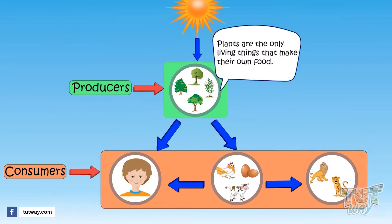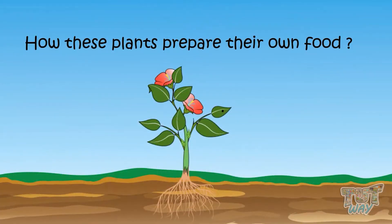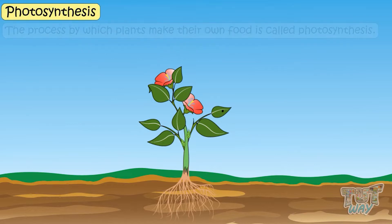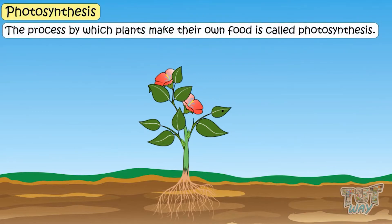Let's see how these plants prepare their own food. The process by which plants make their own food is called photosynthesis. Let's learn it!